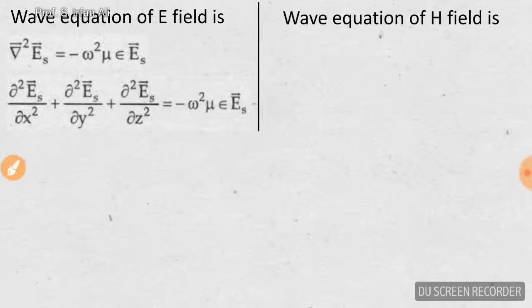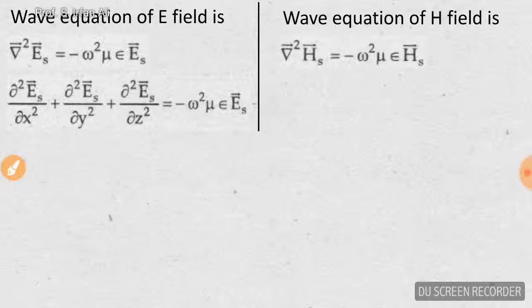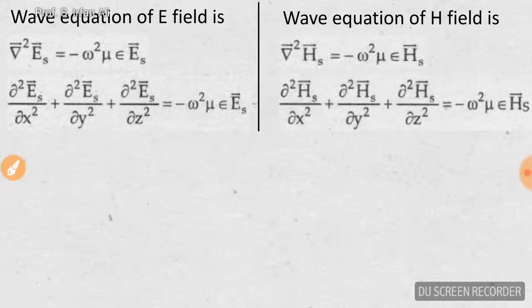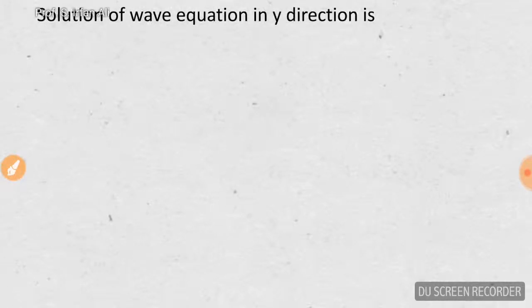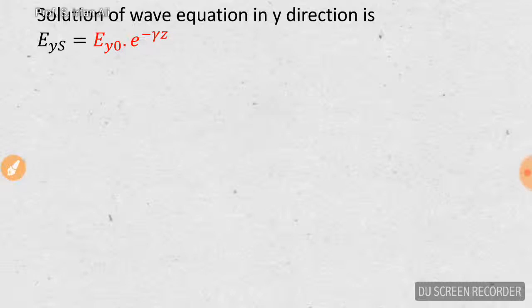Similarly, we have the wave equation for the H field, analogous to the E field. The solution of the wave equation for Eys is: Eys = Ey0 times e to the power minus gamma z, where Ey0 is a constant. This is the solution of the wave equation for the E field in the y direction.